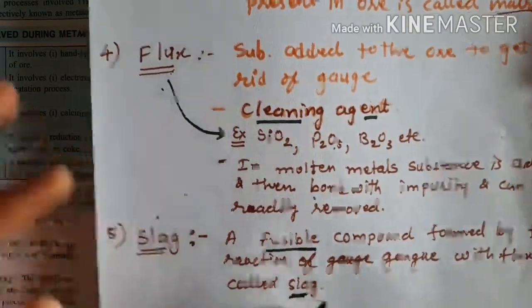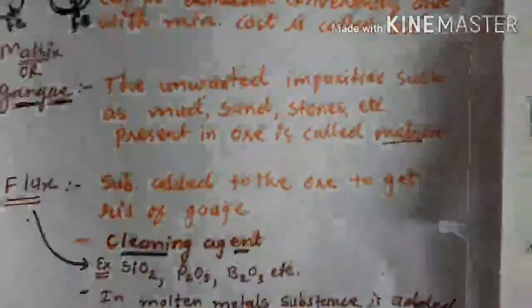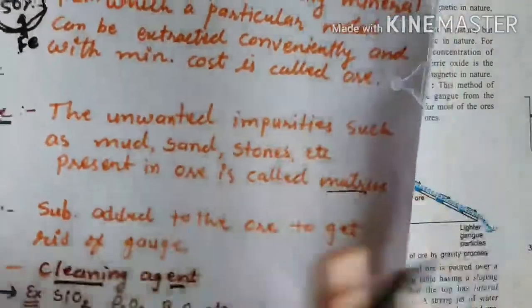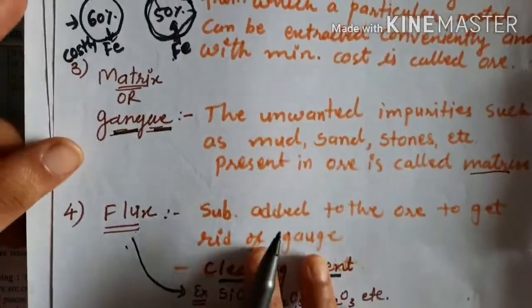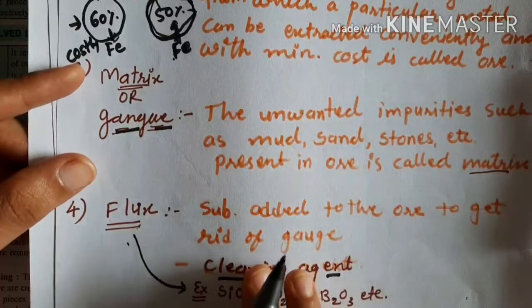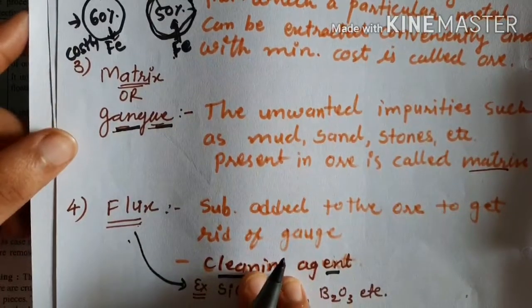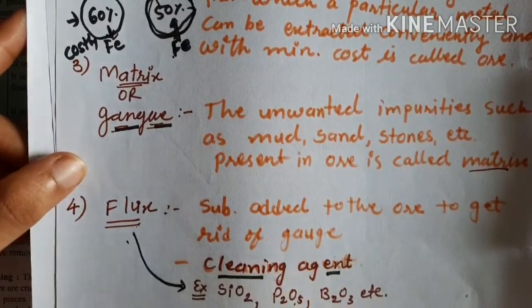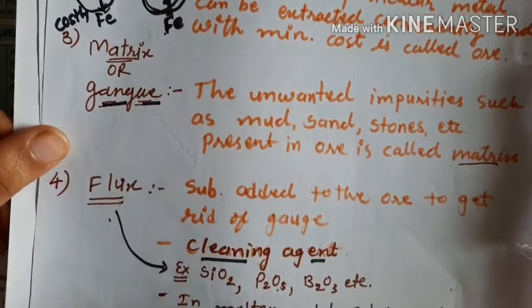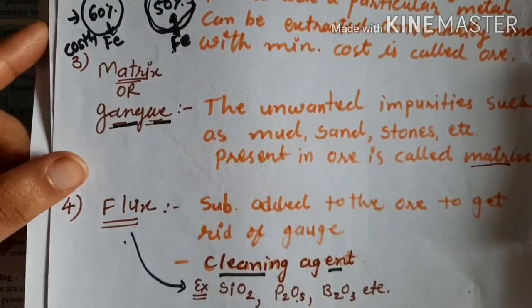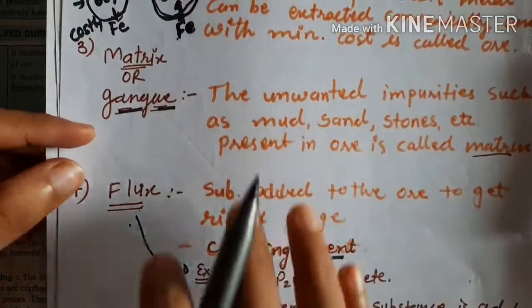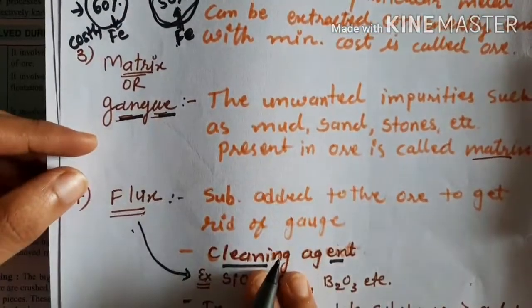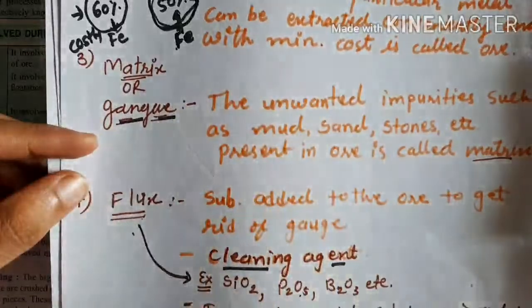These terms are very important for exam purposes. You need to remember them: mineral, ore, matrix, flux, and slag. No need to memorize all the definitions - just understand them thoroughly and you can write them in your own way. If you understand what I am explaining, you can easily write about it.